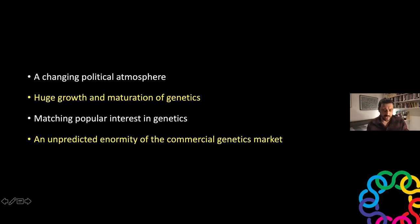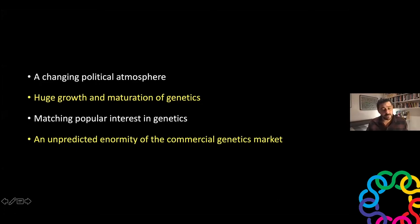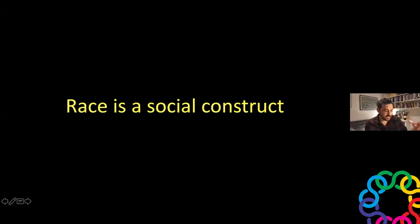One thing none of us predicted very well was the enormous growth in the commercial genetics market, dominated by ancestry testing kits. The two lead companies are 23andMe and Ancestry.com, but there are many others. The commercial genetics market is worth billions, and the genomic data it owns absolutely dwarfs what is in the public and biomedical sector. I take a very dim view of ancestry testing kits — I think they don't serve our aims of teaching how we think about genetics and human biodiversity.